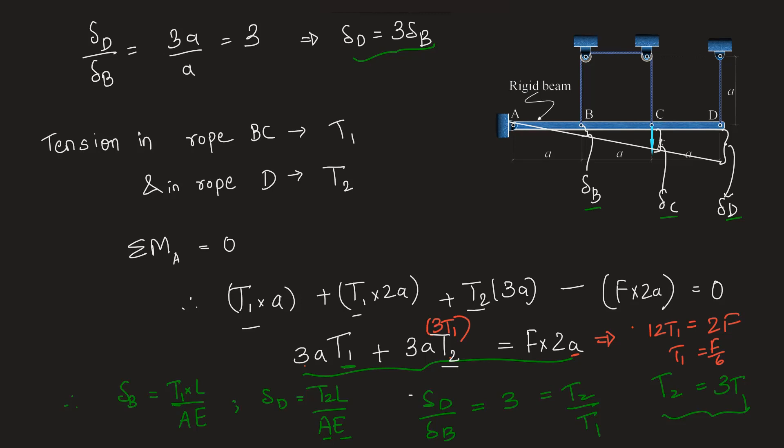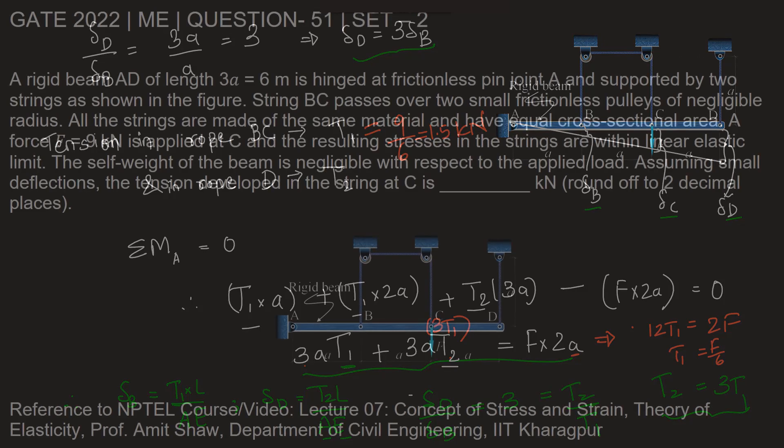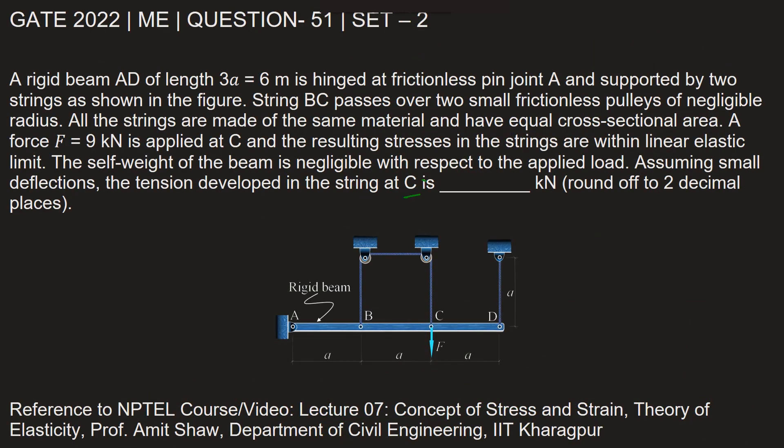Now value of F is given to us. So from there we can find T1 as F is 9 kN by 6, which is 1.5 kN. Let's go back and fill in this answer. Tension developed in string C, which we took as T1, is 1.5 kN.